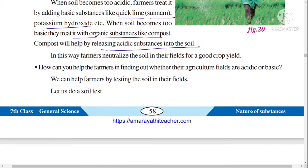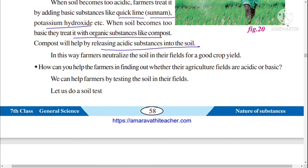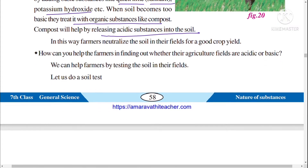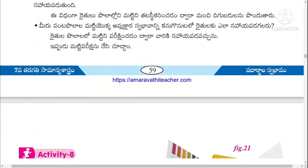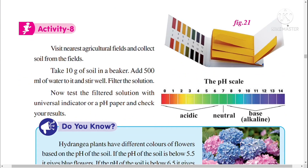We can help farmers by testing the soil in their fields. For this activity, visit the nearest agriculture field and collect soil. Take 10 grams of soil in a beaker, add 500 ml of water, stir it well, and filter the solution. Then test the filtered solution with a universal indicator or pH paper and check the results.